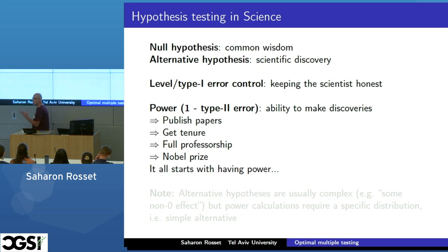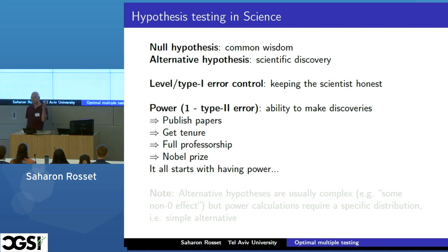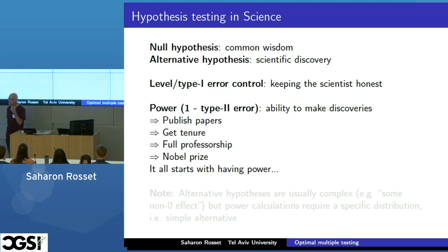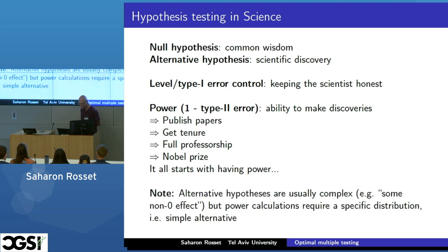And if we publish really popular papers, we might get a Nobel Prize. It all starts with having power for our tests. And this is not completely just some statistician's dream. There was a genius physicist called Higgs. Before someone could get a Nobel Prize for the Higgs boson discovery, they had to build this crazy particle accelerator, collect lots of data, and eventually reject the null that there is no Higgs boson, finding a significant result that includes the Higgs boson at a specific mass.